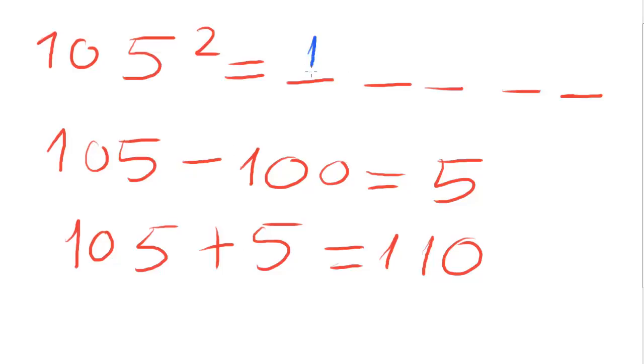Now, we can complete the first three digits and the last two digits. Calculate five square, which is 25. And the final result is this. Very easy.